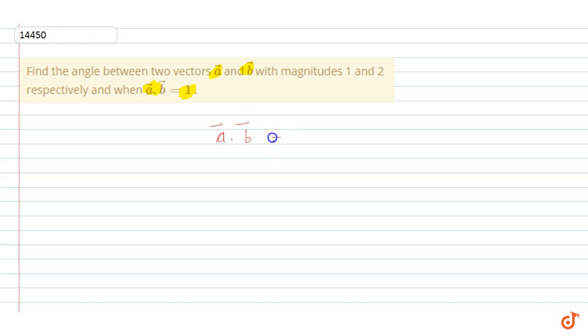a vector dot b vector is equal to magnitude of a vector times magnitude of b vector times cos theta, where theta is the angle between a vector and b vector. In this question, the magnitude of a vector is 1